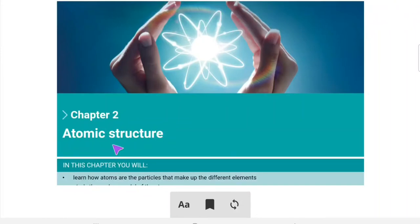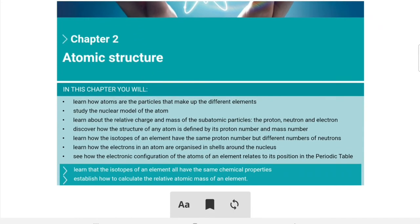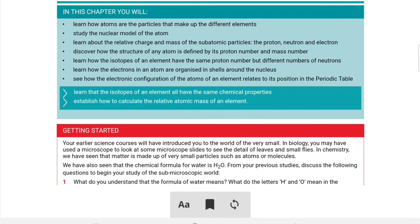Hello children, so today we are going to learn about atomic structure, that is chapter 2 in our chemistry. In this section we will be discussing about elements, model of atoms, subatomic particles and how the structure of any atom is defined by its proton number and mass number, about isotopes, about organization of shells, about electronic configuration.